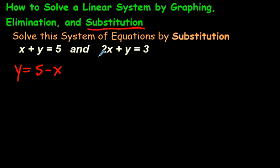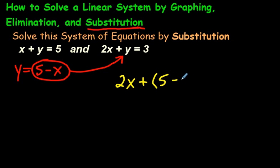But what we're going to do is take this 5 minus x, and we're going to substitute it, wherever we see y, into the other equation. We're going to substitute it right there, using brackets. So let's do that right now. So we have 2x plus, and here is where we're going to put 5 minus x. So 5 minus x. Instead of y, we're putting 5 minus x, and that equals 3.